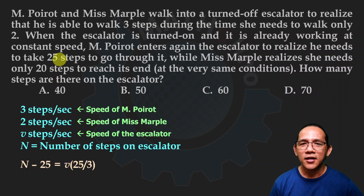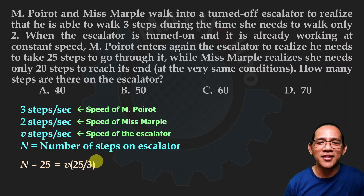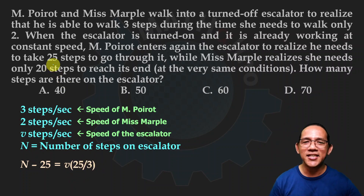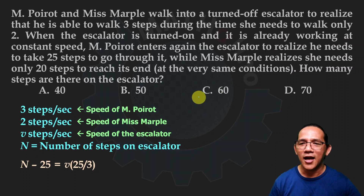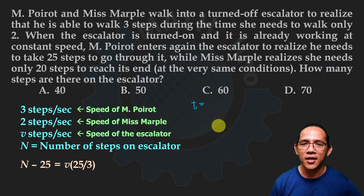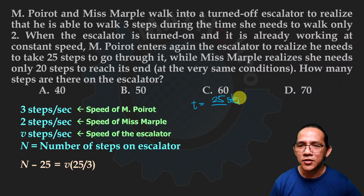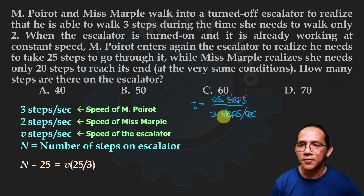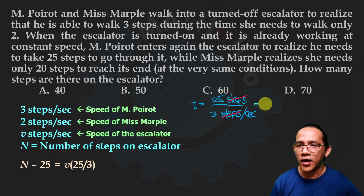This happened while Poirot took 25 steps, so the time elapsed is 25 over 3 seconds. Why? Because he reached the top in 25 steps at a speed of 3 steps per second. Time equals number of steps divided by speed: 25 steps divided by 3 steps per second gives 25/3 seconds. The steps unit cancels out, leaving seconds. So n minus 25 equals V times 25/3.